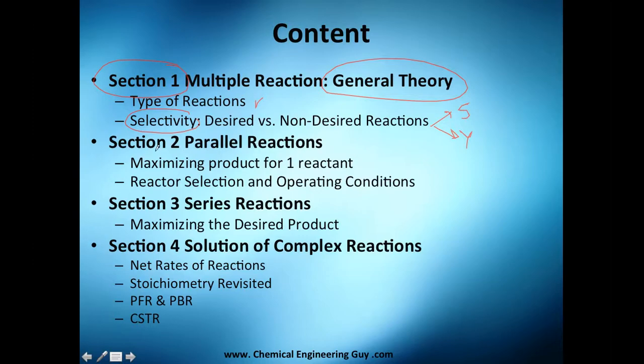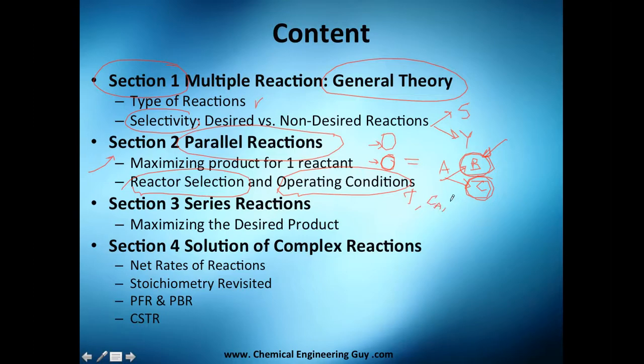Now, after you get this little bit theory, we pass to the parallel reactions. When I say parallel reaction doesn't mean that it's parallel reactors. No, it means that you are in the same reactor and you have two reactions that either may take A, may turn to B or may turn to C. So if you want to produce B, you need to fight this other reaction. We're going to see how to maximize the production of this product. And not only that, we're going to see also what reactor shall we choose and which operating conditions, like temperature, concentration, flow rates, etc.